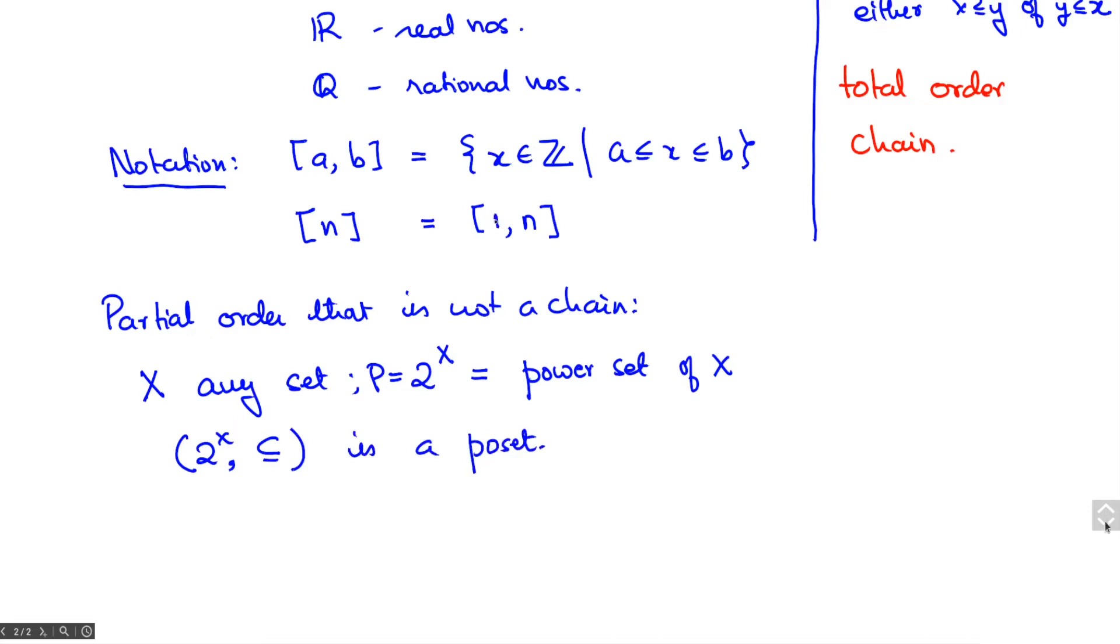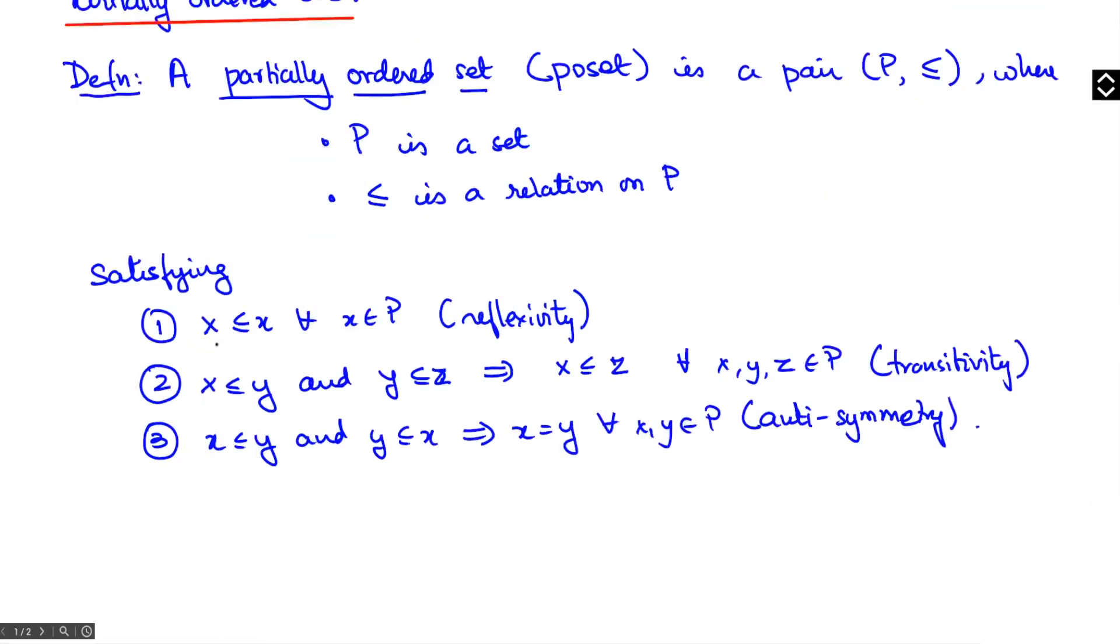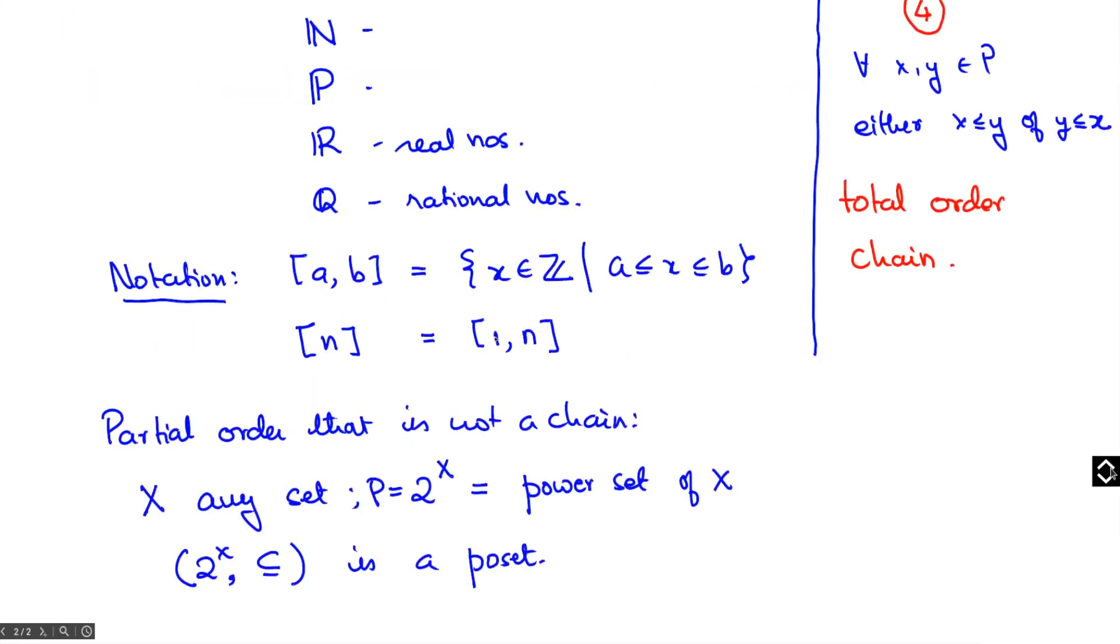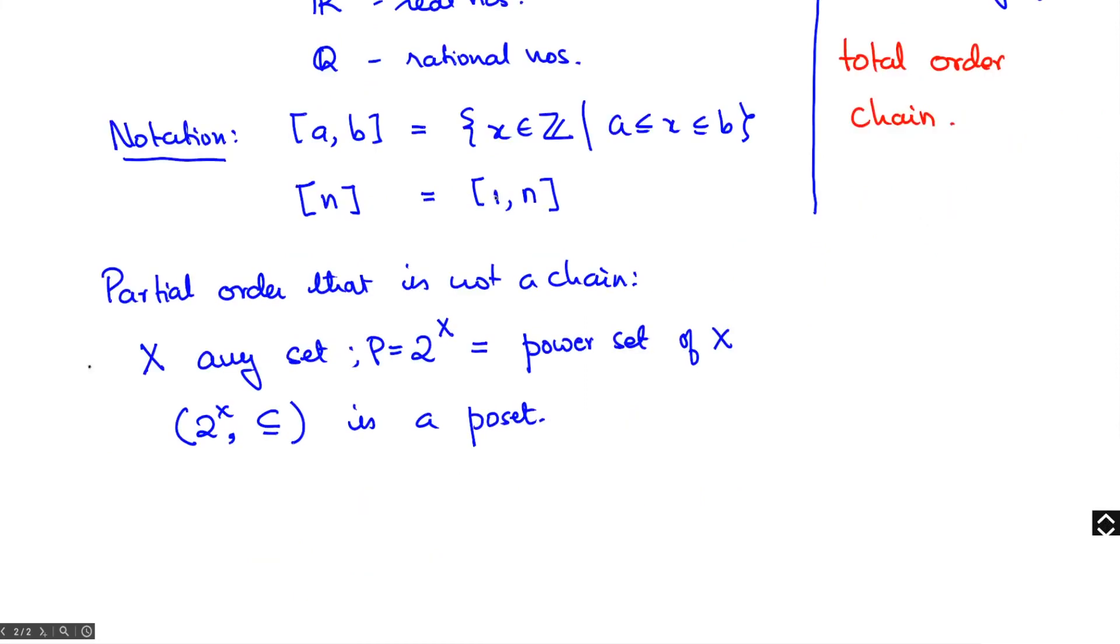It's easy to see that set containment satisfies these three axioms. Obviously every set is contained in itself. If a set x is contained in a set y and set y is contained in set z, then x is contained in z. And we know that if set x is contained in set y and set y is contained in set x, then the sets x and y are equal. However, if your underlying set X has at least two elements, then you can show that this partially ordered set is not a chain. I'll leave that as an exercise for you to think about.